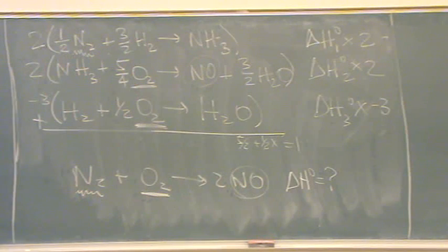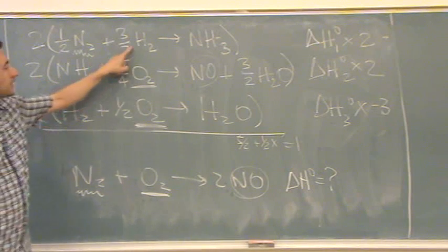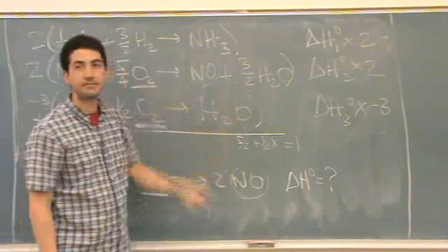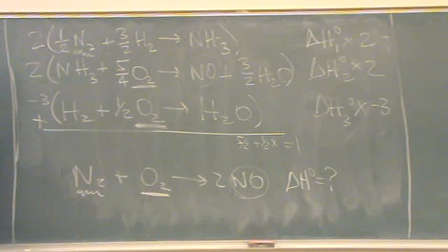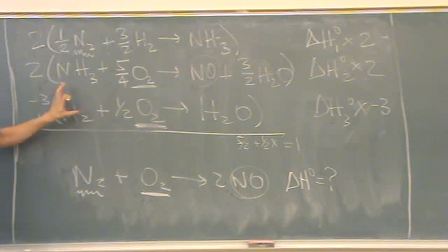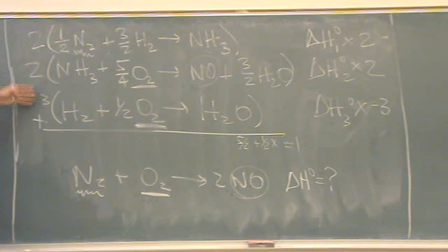Now before we do all that, what are these that are not underlined called? Intermediates. Intermediates. They must, all intermediates, anything not underlined or circled, must cancel out to here. So, let me tell you a couple tricks. One is, if you've done this right, they're going to cancel, you don't even need to check. You can, depending on how confident you feel.